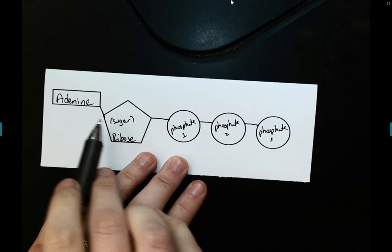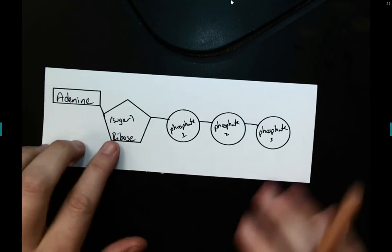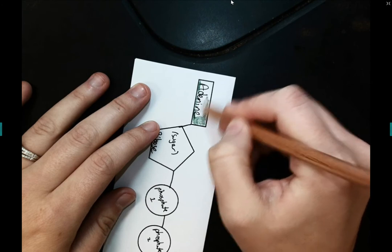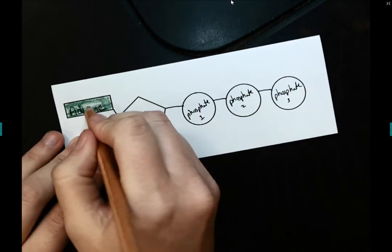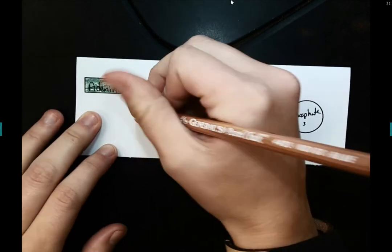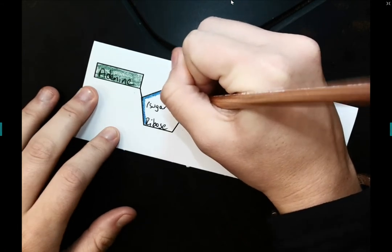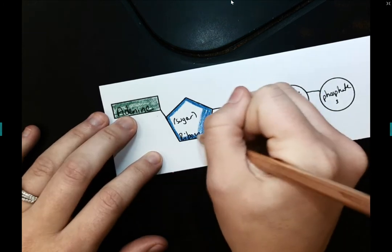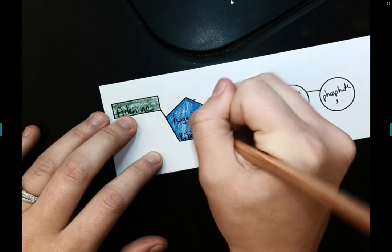So now that I have my bonds, I actually have my ATP molecule. So I am going to color it in. So I'm going to color my adenine green. Try to do my best to stay in the lines here. So there's my adenine. It's green. And then I'm going to color my ribose sugar blue. So color in my sugar ribose.